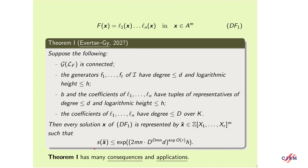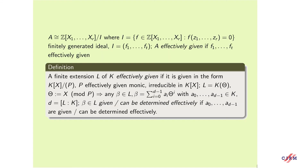This theorem is effective, quantitative, and has many applications. A finite extension L of K is effectively given if it is given as K[theta] where P is an effectively given monic irreducible polynomial. In that case L = K[theta] and every element of L can be written as a polynomial in theta with coefficients in K. We say that beta in L is given or can be determined effectively if these coefficients are given or can be determined effectively.